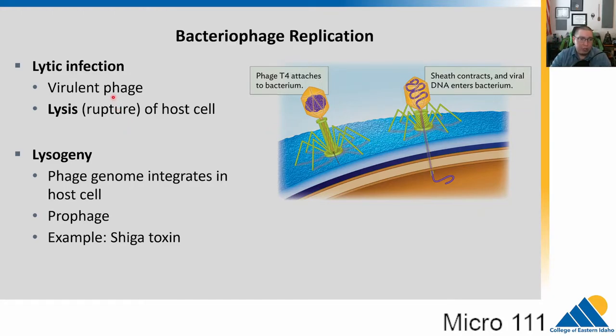We have the lytic phase, where the virulent phage goes in, replicates, and ruptures the cell. That's the lysis part of the lytic cycle.